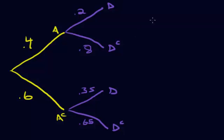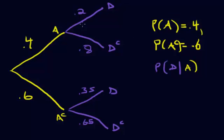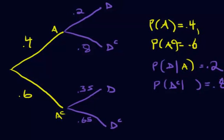So let's label some of this stuff. I have the first branch, A, in yellow and the probability of A is 0.4, and the probability of A complement is 0.6. Remember each branch has to add up to 1. Now this next branch is the probability of D — but it's the probability of D given that you've already gone up the A branch. The probability of D given A is 0.2, and the probability of D complement given A is 0.8.